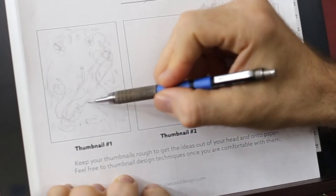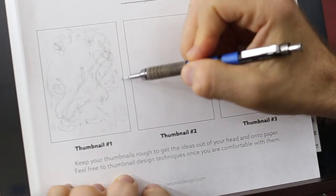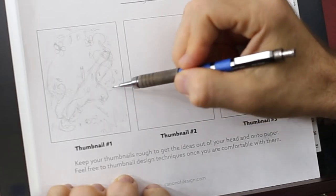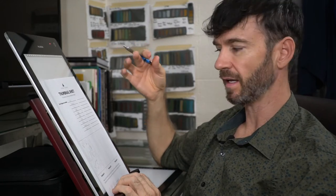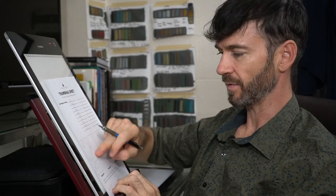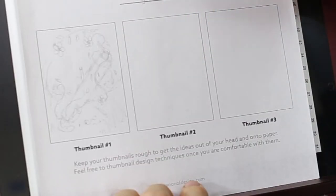I'm going to make this ground plane here. So that's the thumbnail sketch, nice and scribbly. Now if you get comfortable enough with the design techniques, you can start to sketch out some design techniques here that you want to incorporate in the composition.